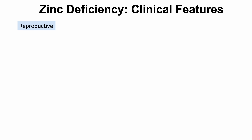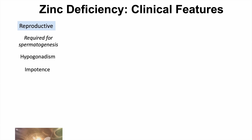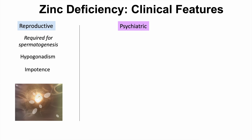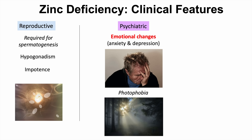Reproductive issues can occur since zinc is required for spermatogenesis. Deficiency can lead to hypogonadism and impotence. Psychiatric issues include emotional changes like anxiety and depression, and even photophobia — sensitivity to light.